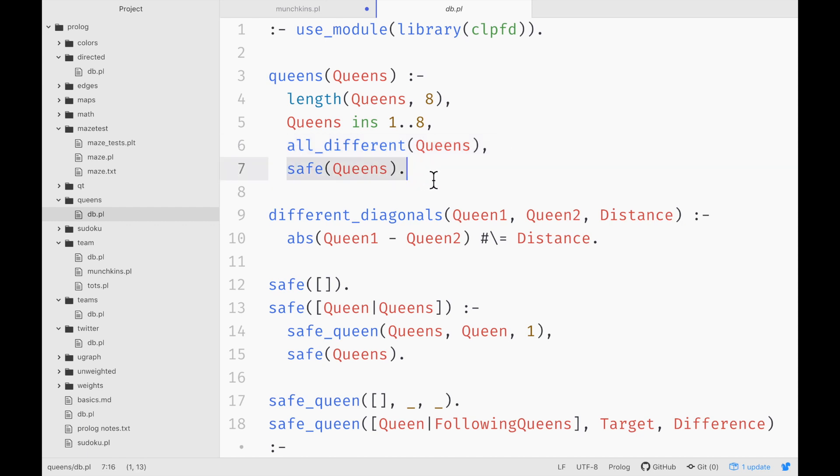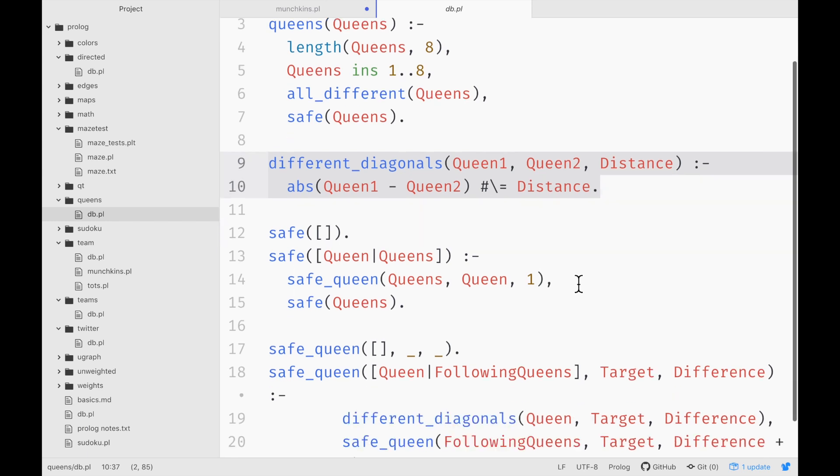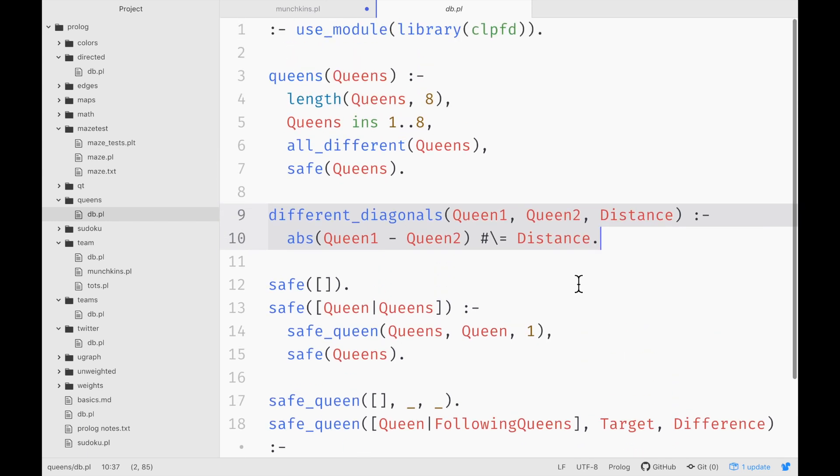And none of the queens should be able to attack each other. That is, none should be in the same row, column, or diagonal. And the rest of the program is describing what safe means, that they're on different diagonals and so on and so forth. So it's a very short program to describe a very difficult logic constraint problem. And it turns out that Prologue is often used as a logic constraint language for things like schedules, for things like programming a route, or things like that.